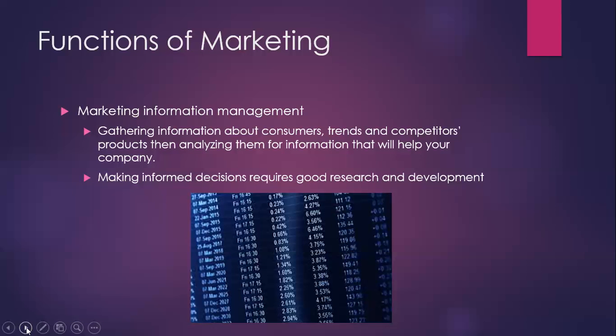The third function of marketing is marketing information management. How do I know what my clients are going to want, what's out there, and where I'm going with pricing? It's about gathering information about your customers, the trends in the world, and your competitors' products. If you understand how competitors work and what they're selling things for, it's easier to figure out your pricing. It requires good research and development — the more you know about the market, the better equipped you'll be to meet the needs and wants of people.